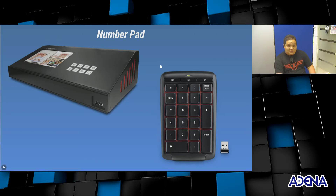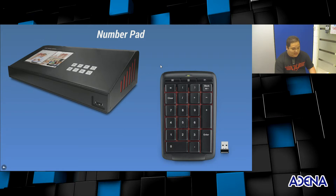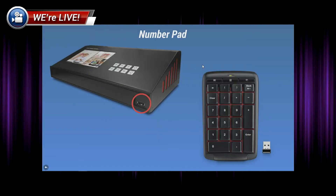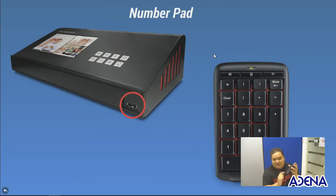This one is very interesting — you can also control the media station via the number pad. Any number pad can be used as a remote controller so that you can start your recording, pause, stop your recording, and change the themes. You need to connect it right here via USB. With the number pad, just by pressing the number of the theme, you will go directly into it.